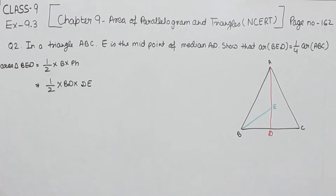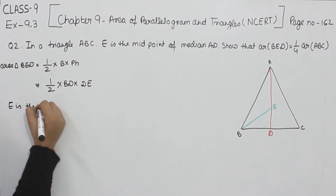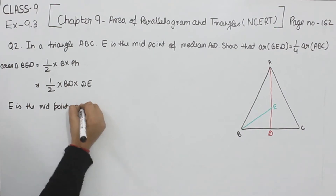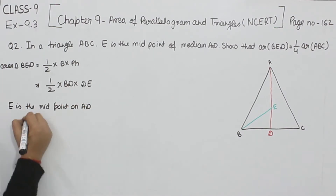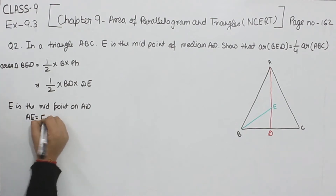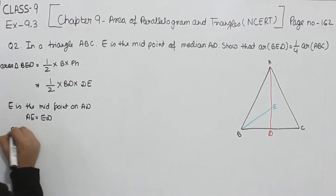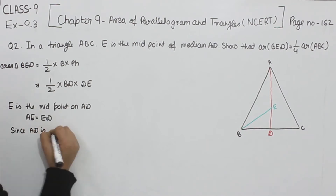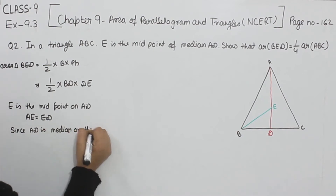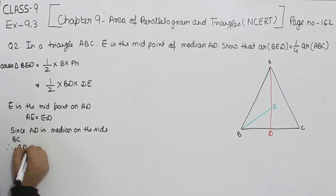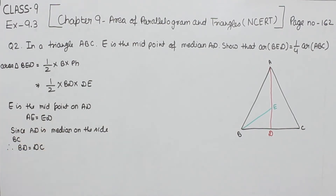Now, since E is the midpoint of AD, we have AE equal to ED. Also, since AD is the median on side BC, we have BD equal to DC.